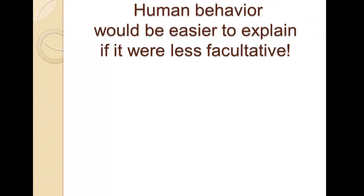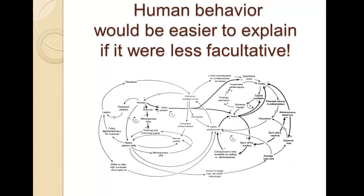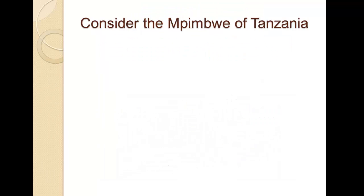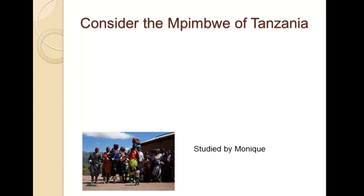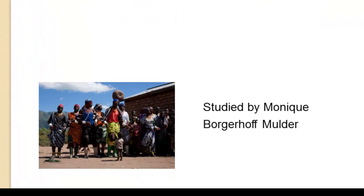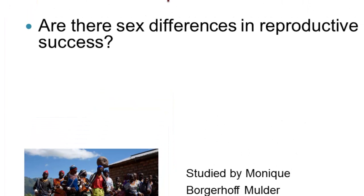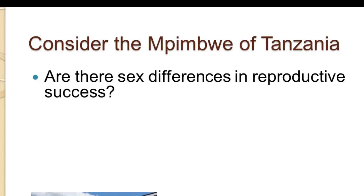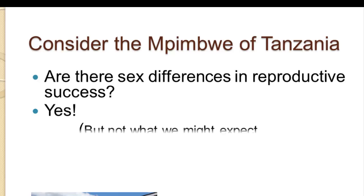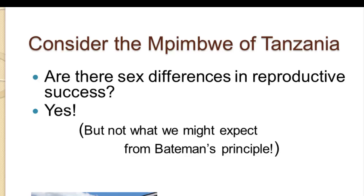All of this would be easier to explain if human behavior were less facultative — that is, if it varied less according to ecological situation. There is a lot of causal complexity in sorting out how adaptation has shaped human behavior. As an example, we look at the Impimbwe of Tanzania, studied by Monique Borgerhoff Mulder over the last decade. She poses the question: are there sex differences in reproductive success among the Impimbwe?